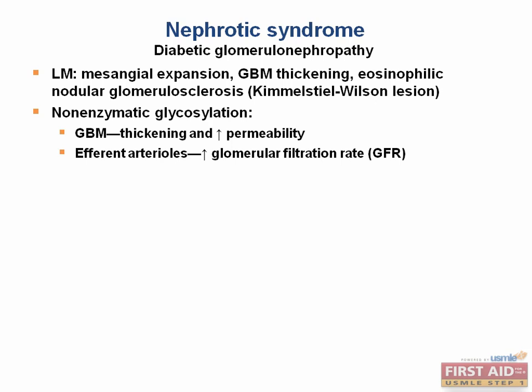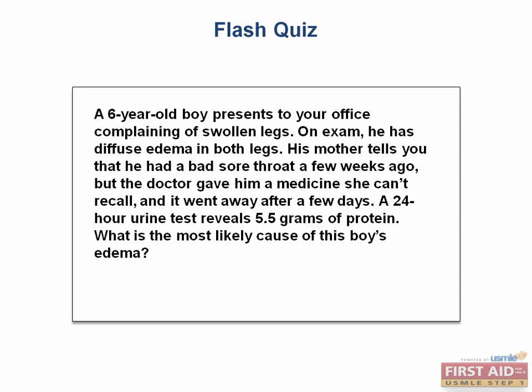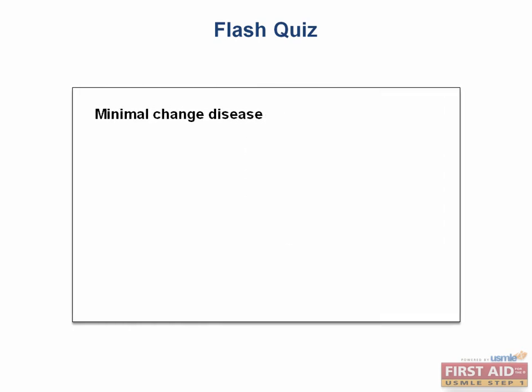Now let's see how prepared we are to answer exam questions. A six-year-old boy presents complaining of swollen legs. On exam, he has diffuse edema bilaterally. His mother tells you that he had a bad sore throat a few weeks ago and was given a medication that resolved it. A 24-hour urine test reveals 5.5 grams of protein. The most likely cause of this boy's edema is minimal change disease.